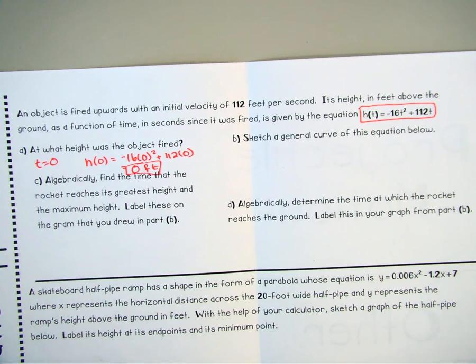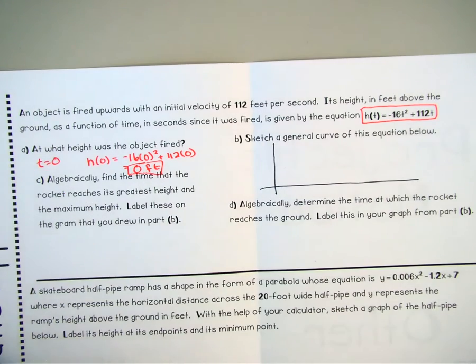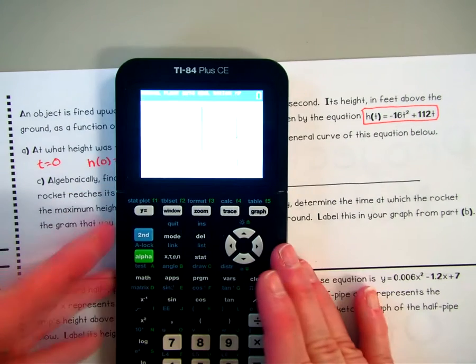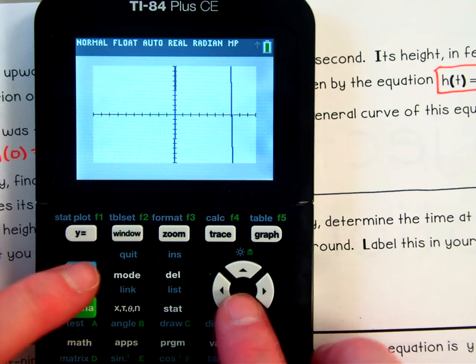Part B, sketch a general curve of this equation. So all of our equations in these word problems are always going to be quadrant one. So I'm only going to draw a quadrant one graph here. And then I'm going to use my calculator. So I'm going to go to my y equals, type in negative 16t squared plus 112t. Look at my graph. You're not going to be able to see this too terribly well. But we can't really see too much. What if I do that? There we go. I'll dim the screen a little bit. You can see it much better now.